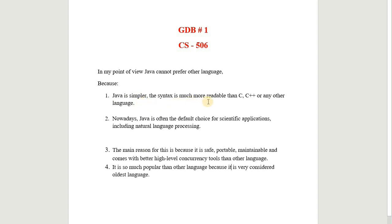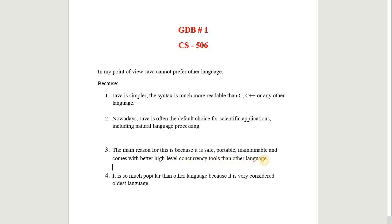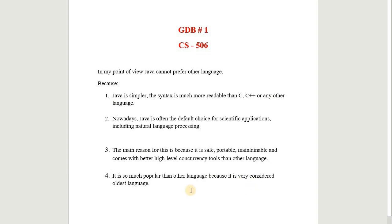Java is the default choice for centric applications, including those involving natural language processing. The main reasons are that Java is safe, portable, maintainable, and comes with better high-level concurrency tools than other languages. It is also much more popular and is considered a very mature language.